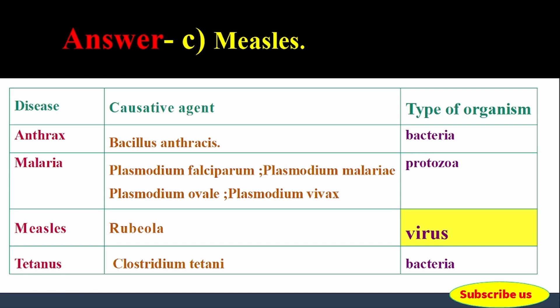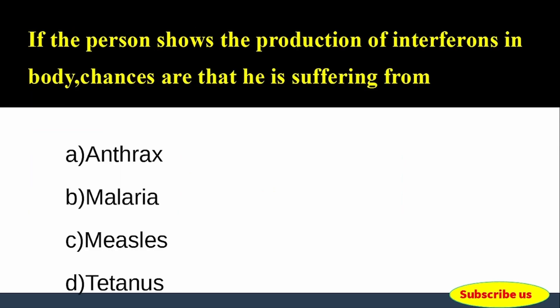To compare the other options — Anthrax is caused by Bacillus anthracis, which is a bacterium. Malaria is caused by Plasmodium, which is a protozoan. Tetanus is a bacterial disease. Since interferons are produced in response to viral attacks, measles is the correct answer as it is a viral disease.